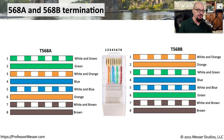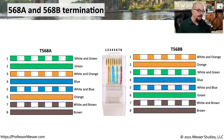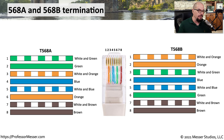Here are the colors used for these two standards, specifically looking at the eight wires inside of an RJ45 connection, numbered one through eight. For T568A and T568B, you can see that some wires are different but some are the same. For example, pins four and five are blue and white-and-blue in both standards, and pins seven and eight are white-and-brown and brown in both standards. The only two pairs that differ are pins one and two and pins three and six. In T568A, pins one and two are white-and-green and green, and pins three and six are white-and-orange and orange.